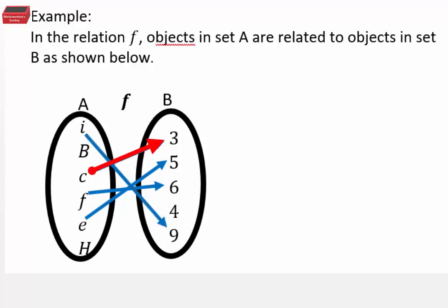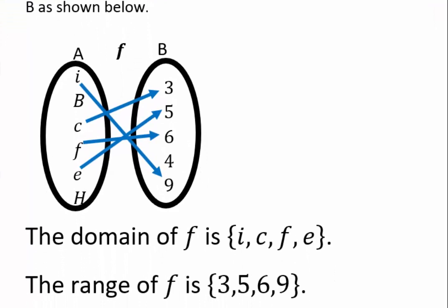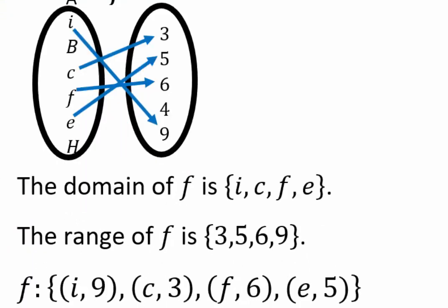You can see capital B and capital H that are in A do not have any corresponding elements in set B. So the domain for us here for F is going to be i, c, f, and e. And the range will be 3, 5, 6, and 9. We can also represent the function F as tuplets. So you have curly brackets and then you have pairs: i comma 9, c comma 3, and so on. They are separated with commas. So each corresponding relation, i and 9 is one pair, c and 3 is another pair, and so on. That's two different ways that you can use sets to represent relations.